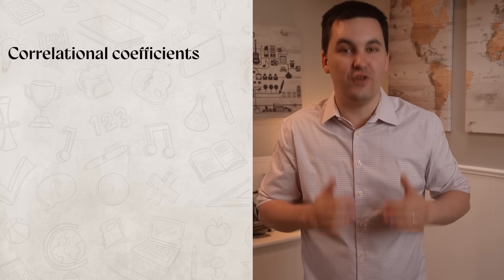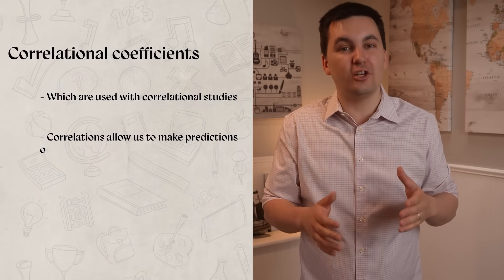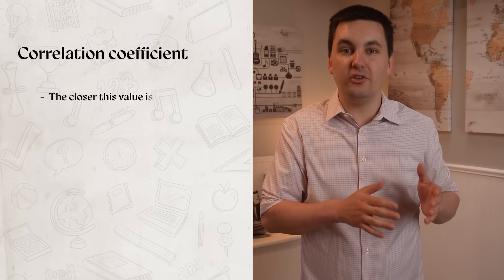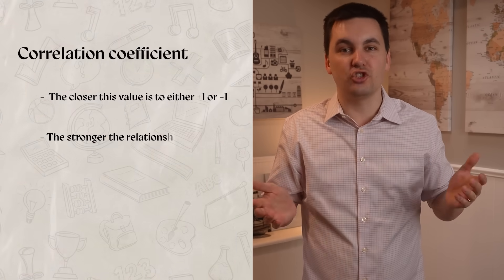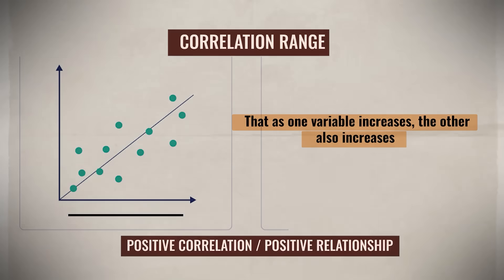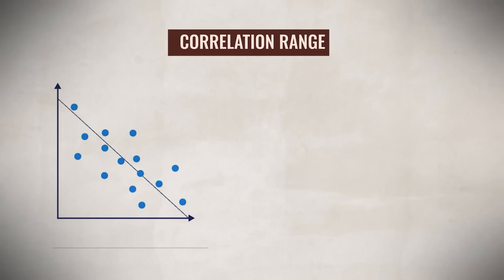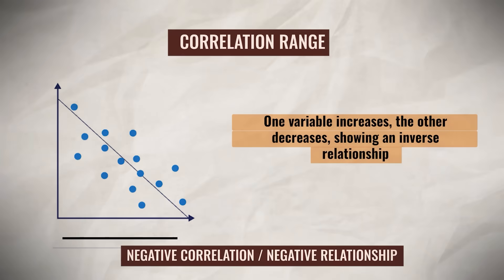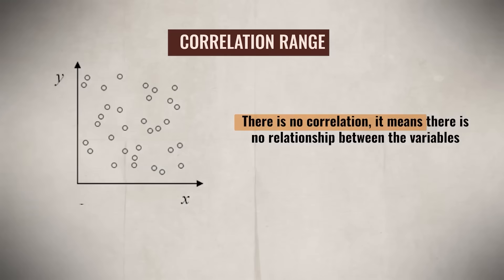All right, up next, we have correlation coefficients, which are used with correlational studies. Correlations allow us to make predictions on what will happen in a study. But remember, correlation does not mean causation. When analyzing the results of a correlational study, you will examine the correlation coefficient. The closer this value is to either positive one or negative one, the stronger the relationship between the two variables. A coefficient between zero and one indicates that as one variable increases, the other increases as well. This is known as a positive correlation or positive relationship, which when plotted on a scatterplot would appear as an upward trend. On the other hand, a correlation coefficient between zero and negative one indicates that as one variable increases, the other decreases, showing an inverse relationship. This is known as a negative correlation, which when plotted on a scatterplot would appear as a downward trend. If there is no correlation, it means there is no relationship between the variables and the data points on the scatterplot will be scattered randomly.